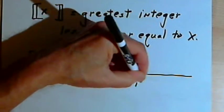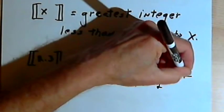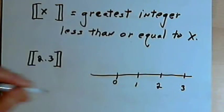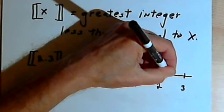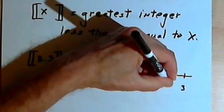So let's draw a number line. Here's 0, 1, 2, and 3. And 2.3 is going to be between the 2 and the 3. Let's call this 2.3.